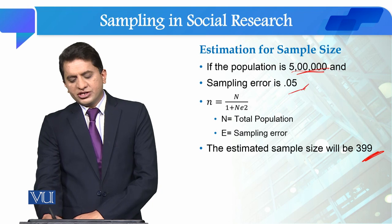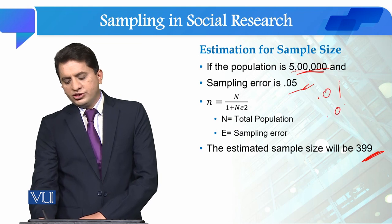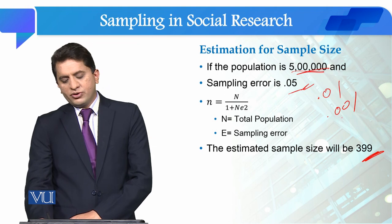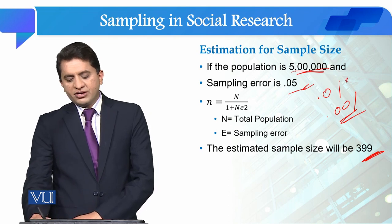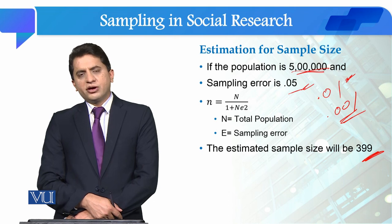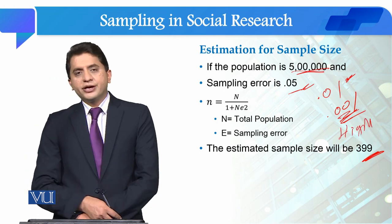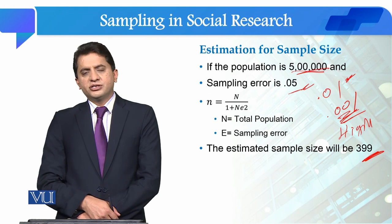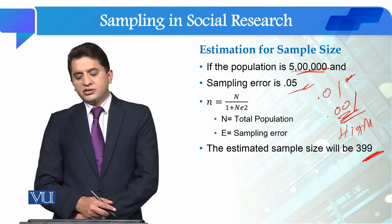The sampling error is generally five percent, but we can use 0.01 or 0.001. If we want 99 percent confidence, we use 0.001. If we want 90 percent confidence interval, we use 0.01. So when you have 99 percent confidence, the sampling error is 0.01 and the sample size will be high. If the confidence interval is low and the sampling error is ten percent, then the sample size will be low.